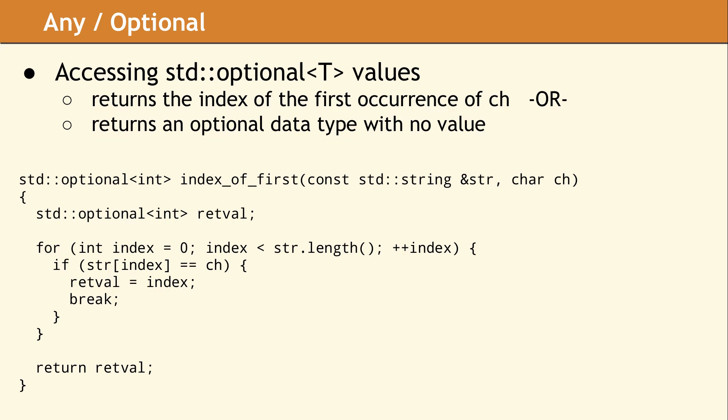In this example, we have a function which returns an optional value indicating the first occurrence of a given character in some string. The return type is std::optional<int>, which may or may not contain a value when the function has completed.